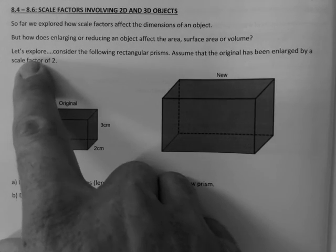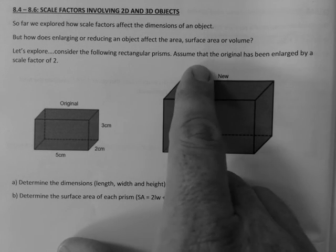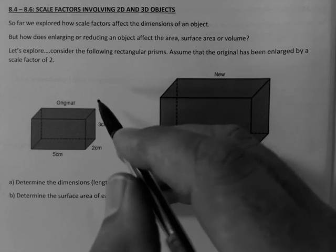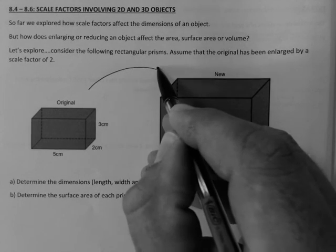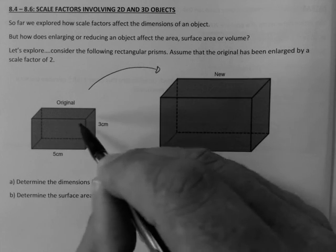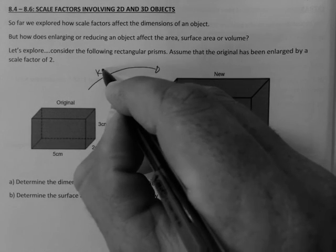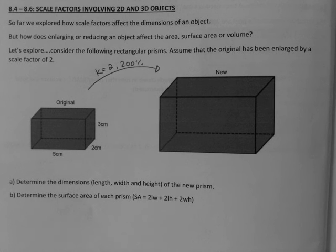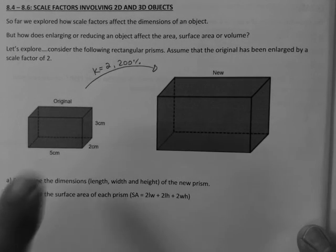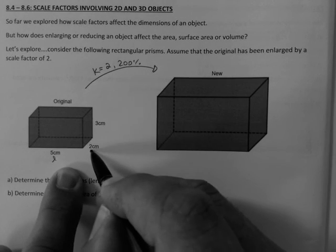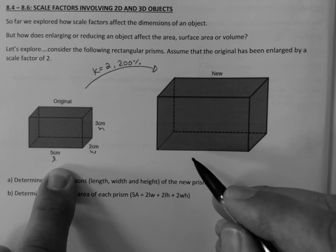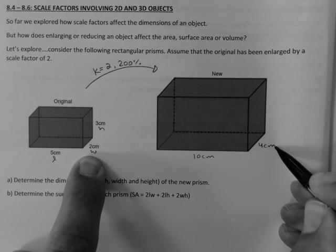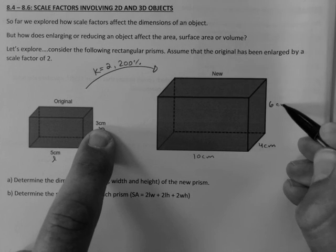So I'm going to take the original and say we took every side on the original and came up with a new one using a scale factor of two, or 200%. We know that we have enlarged it. So the dimensions, if we just looked at the length, the width, and the height, we can say 5 times 2 is 10 centimeters, 2 times 2 is 4 centimeters, and 3 times 2 is 6.